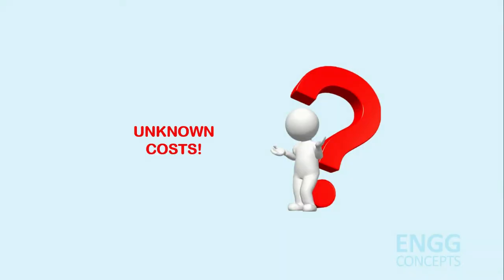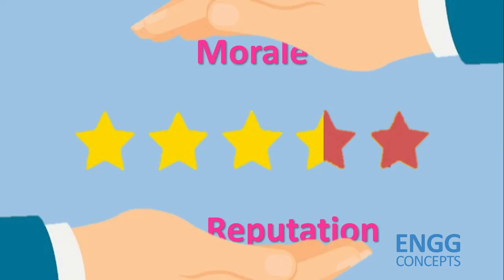Now let's look at Unknown Costs. Unknown costs can be related to accidents at the workplace. While direct and indirect costs are well-discussed, there are other costs that are difficult or impossible to measure yet may have a fatal impact on the success of the company. These are the unknown or unknowable costs of workplace accidents — specifically morale and reputation.